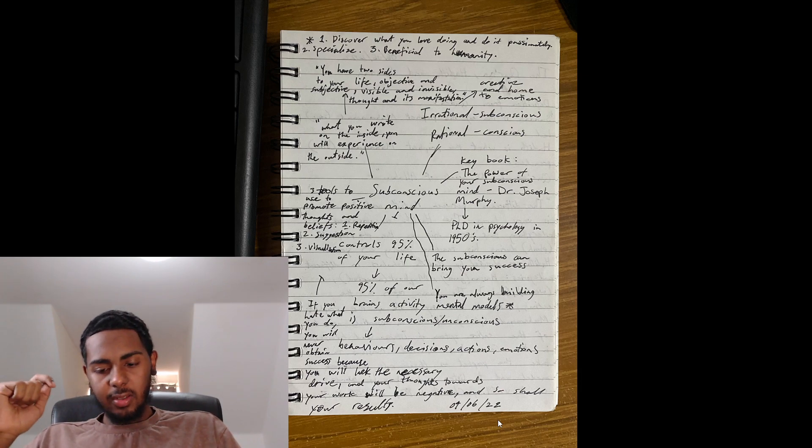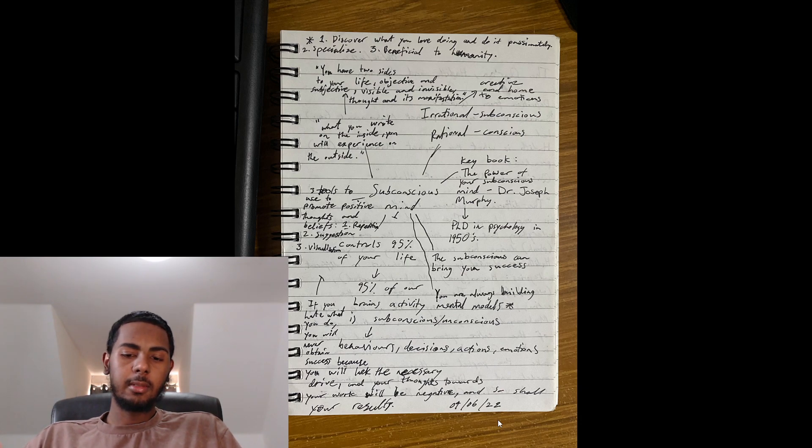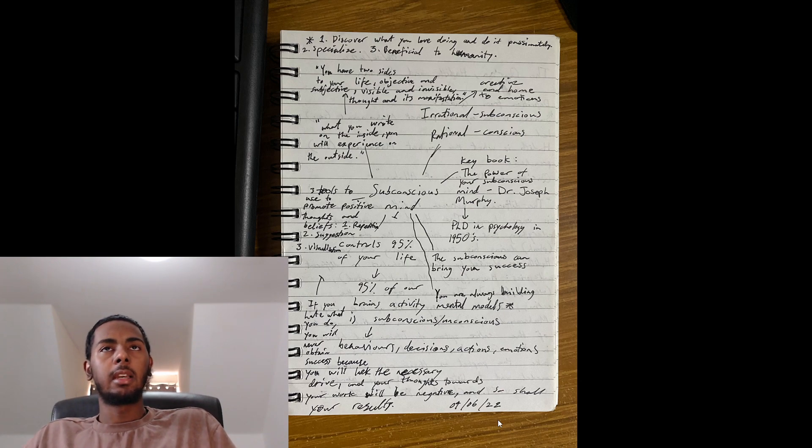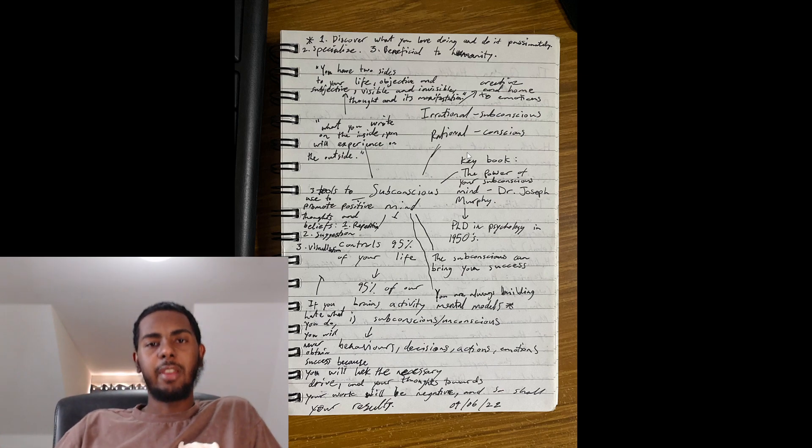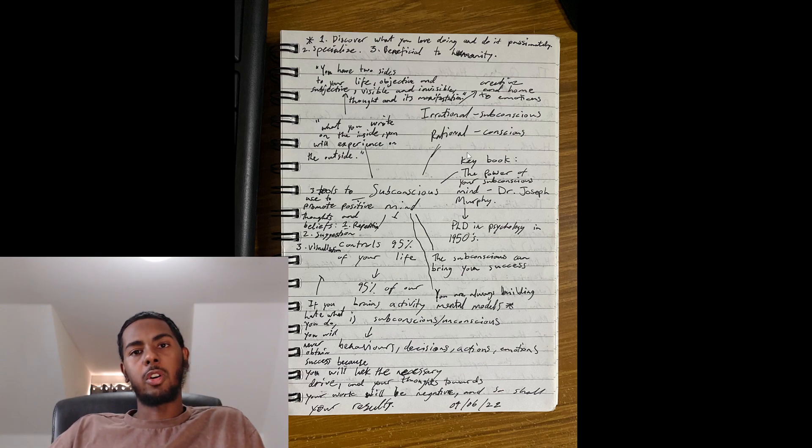95%. Now we don't know how much of that is true but take it with a grain of salt, however 95% is quite a lot. Now he says that the subconscious can bring you success and he kind of defines the difference between the subconscious and the conscious. In the top right here says irrational, the rational side of your brain is the subconscious side and is creative and home to emotions. The rational side is your conscious mind, the thinking and the logical side of things. And there's quite a lot of great books about, I think Thinking Fast and Slow by Daniel is quite a good one for that side of the differences between the conscious and the subconscious mind.